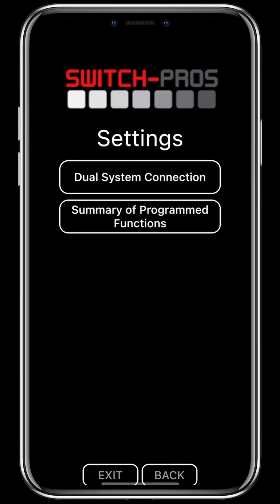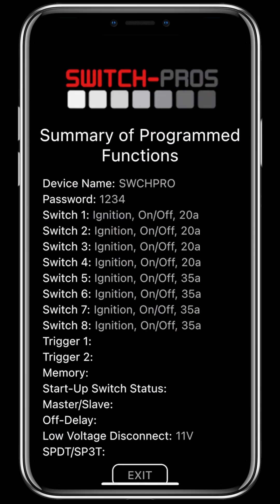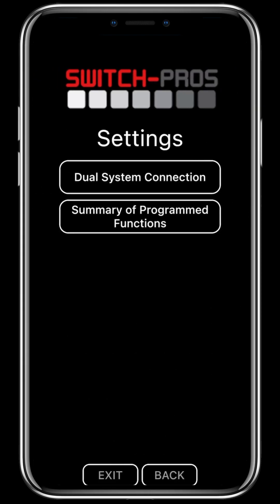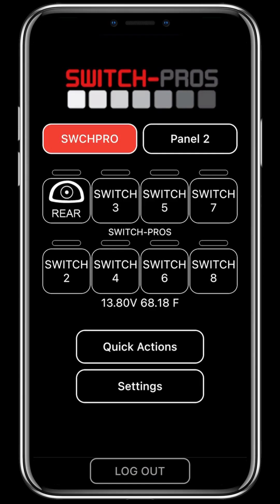A new helpful screen that we have added in our app is in the last page of the settings, and it is called summary of program functions. This screen shows all of the programming that you have in your switch panel, including the device name, the password, and all of the programs that you have set. This allows for easier troubleshooting as well as easy duplication of programming for installers.